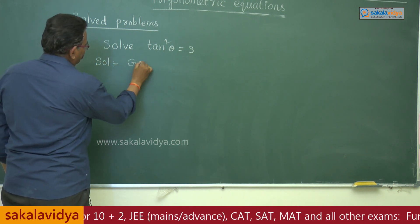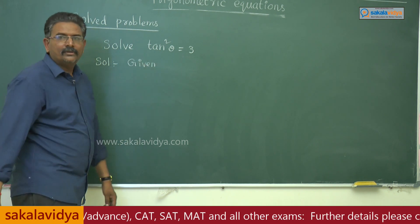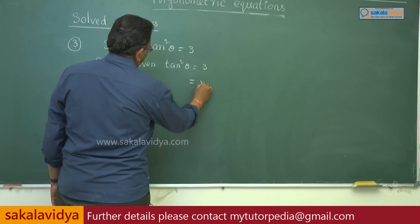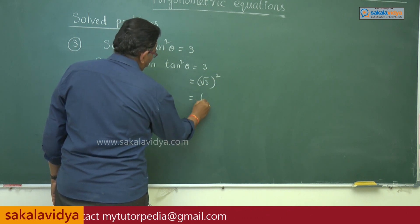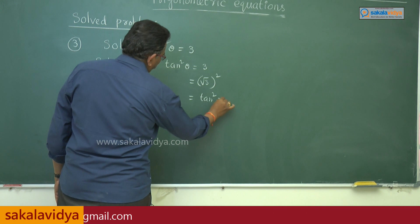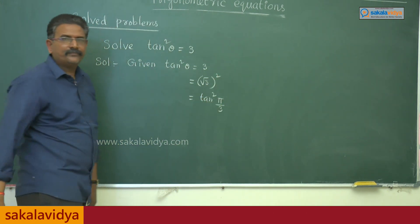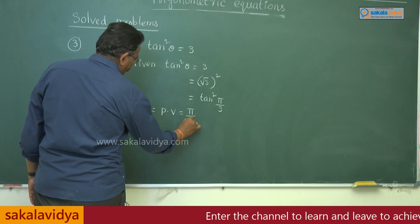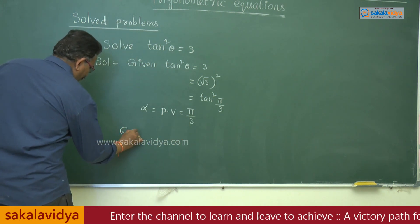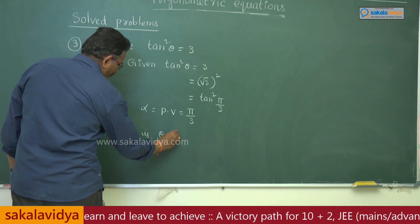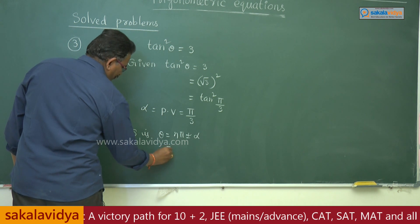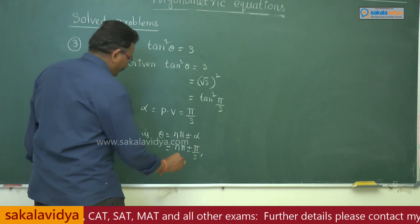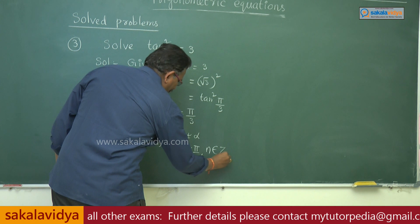Given tan²θ = 3, which can be written as (√3)² = tan²(π/3). So the principal value alpha = π/3. The general solution is θ = nπ ± α = nπ ± π/3.